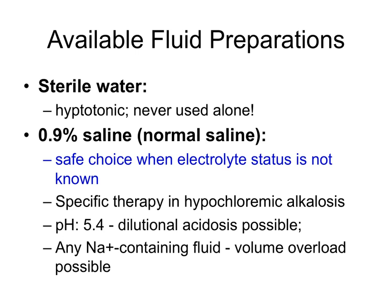Another very basic, common solution that can be given is called normal saline, which is 0.9% saline. It's a safe choice — sodium chloride — when your electrolyte status is not known. We'll show you tables of constituents in each of these fluid preparations, which you probably want to look at, study, and understand completely, comparing them to extracellular fluid. Saline is a specific therapy when we have significant chloride loss in what's called hypochloremic alkalosis. Realize that it's an acidifying solution, so if you give too much of it, you can get what's called a dilutional acidosis.